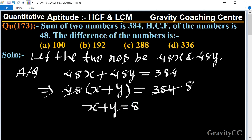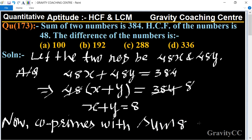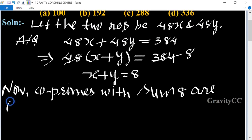Now we find the coprime pairs. Coprimes with sum 8 are (1, 7) and (3, 5).